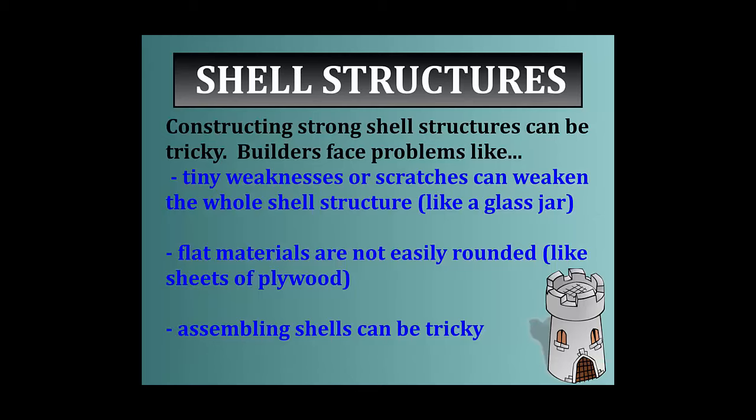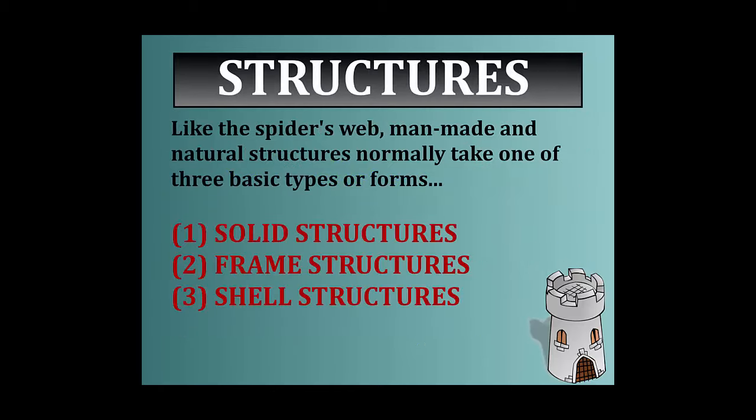Constructing strong shell structures can be tricky. Builders face problems like tiny weaknesses or scratches that can weaken the whole structure — think of a glass jar or an egg where a crack weakens the rest of the shell and can cause it to collapse. Flat materials are not easily rounded; if you've ever tried to round a piece of plywood for a shell or an arch, that gets very tricky. Assembling a shell takes a lot of time, planning, and engineering. Those are the three structural forms: the solid structure, the frame structure, and the shell structure, which we can see throughout the world when we look at different structures that have been built.